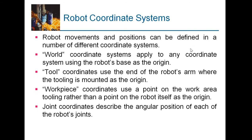The next topic is the robotic coordinate system. Robot movement and position can be defined in a number of different coordinate systems. The world coordinate system uses the robot basis as the origin. The tool coordinate system uses the end of the robotic arm where the tooling is mounted as the origin. The work coordinate uses a point on the work area as the origin rather than the position of the robotic base. The joint coordinate describes the angular position of each of the robotic joints.